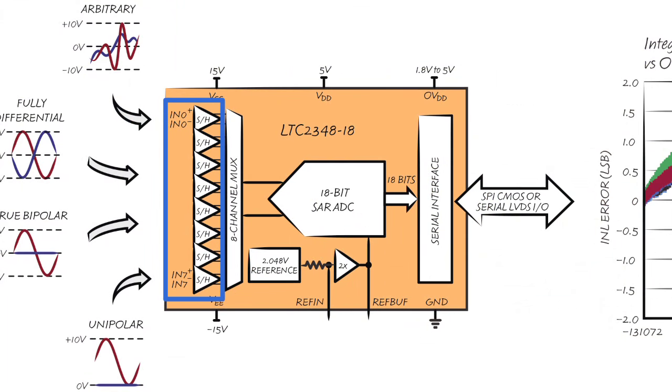During acquisition, eight dedicated sample and hold blocks track the voltage difference between each channel's positive and negative input pins. When the user initiates a conversion, these blocks sample and hold the instantaneous differential voltage on each channel.